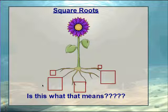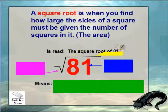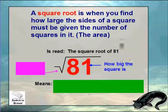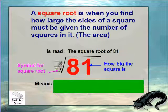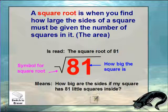All right, this says square roots — we're asking what a square root is. A square root is when you find how large the sides of a square must be, given the number of squares inside it. So when you see this symbol — this funny-looking division symbol with the little check at the end — that's called the square root symbol, also known as a radical. This means the square root of 81, where 81 tells us how big the square is.